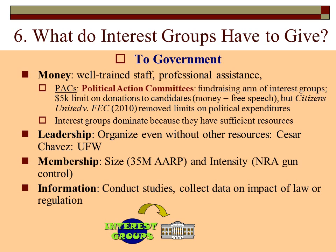This is one of the reasons interest groups dominate in the political sphere — they have sufficient resources. Most individuals don't have the ability to maintain a trained staff and full office whose job is to make sure what we want gets to the ears of our legislators. A second thing interest groups can give is leadership — they can organize even without other resources, as with Cesar Chavez and the United Farm Workers, where a strong and charismatic leader presented an agenda and used it to influence public policy.